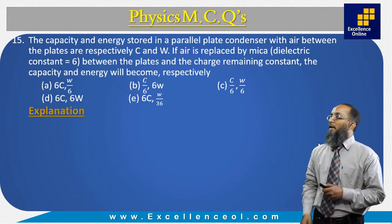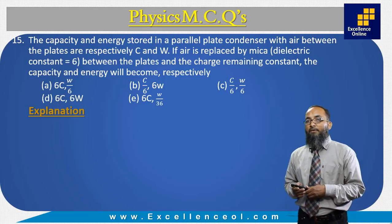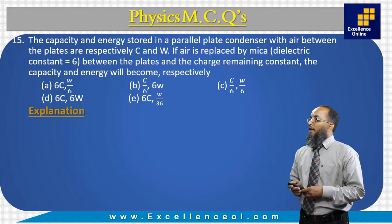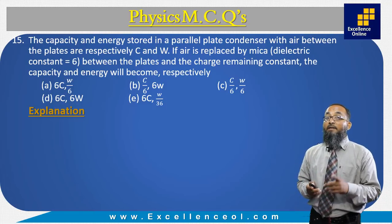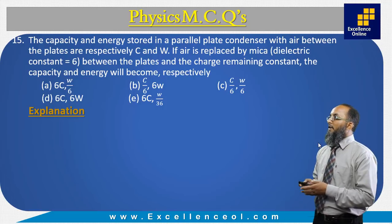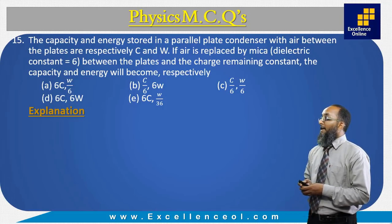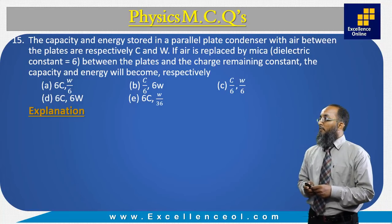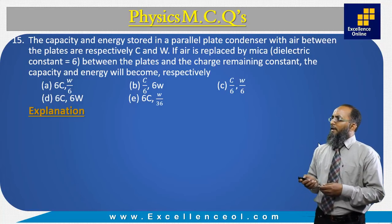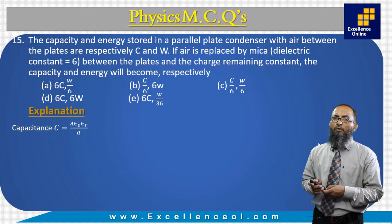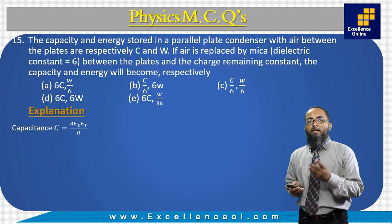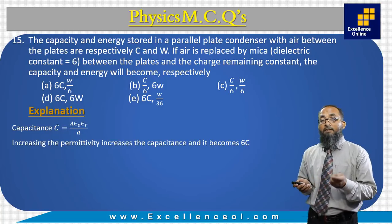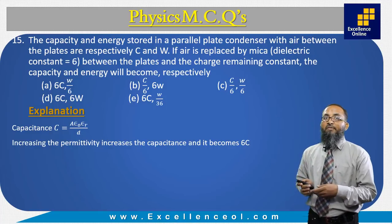The next question: the capacitance and energy stored in a parallel plate condenser with air between the plates are respectively C and W. If air is replaced by mica with dielectric constant 6, and the charge remains constant, the capacitance and energy become — the capacitance formula is C = ε₀εᵣA/d. Since capacitance depends linearly on relative permittivity, increasing it 6 times increases capacitance 6 times.